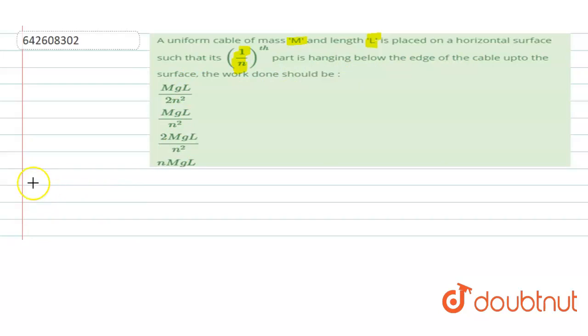So let's understand the problem. This is a table on which a chain is placed such that if the total length is L, its 1 by nth part is hanging, right? So that means if this is the chain, L by n part is hanging and the remaining part, which is L minus L by n, is there on the table.